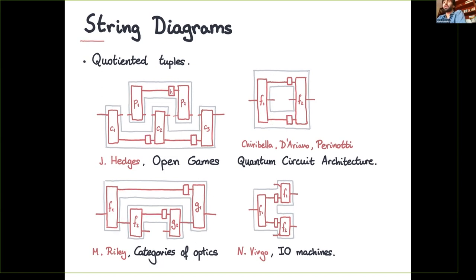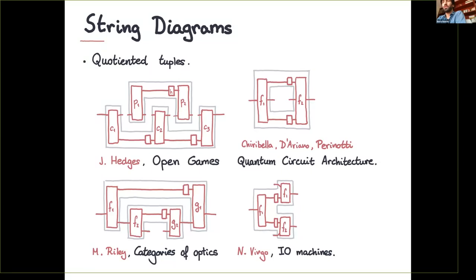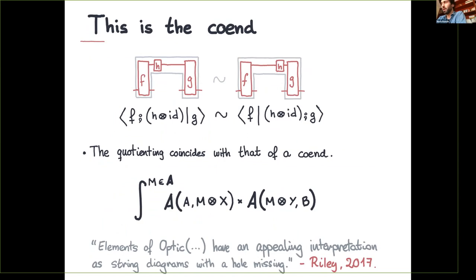The quotient relation works as follows: these diagrams should be equal to these ones, and because we are identifying them, we use a quotient relation generated by these things to keep track of the connectivity information of the diagram. In other words, we are considering tuples quotiented by the equivalence relation generated by sliding along connected wires.